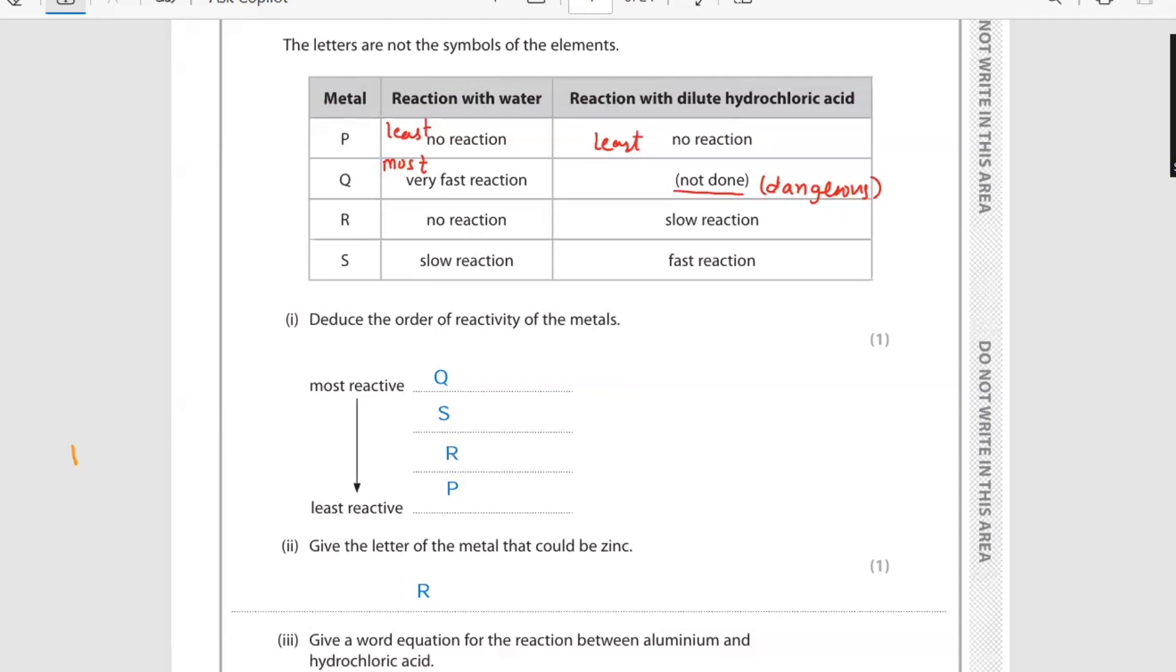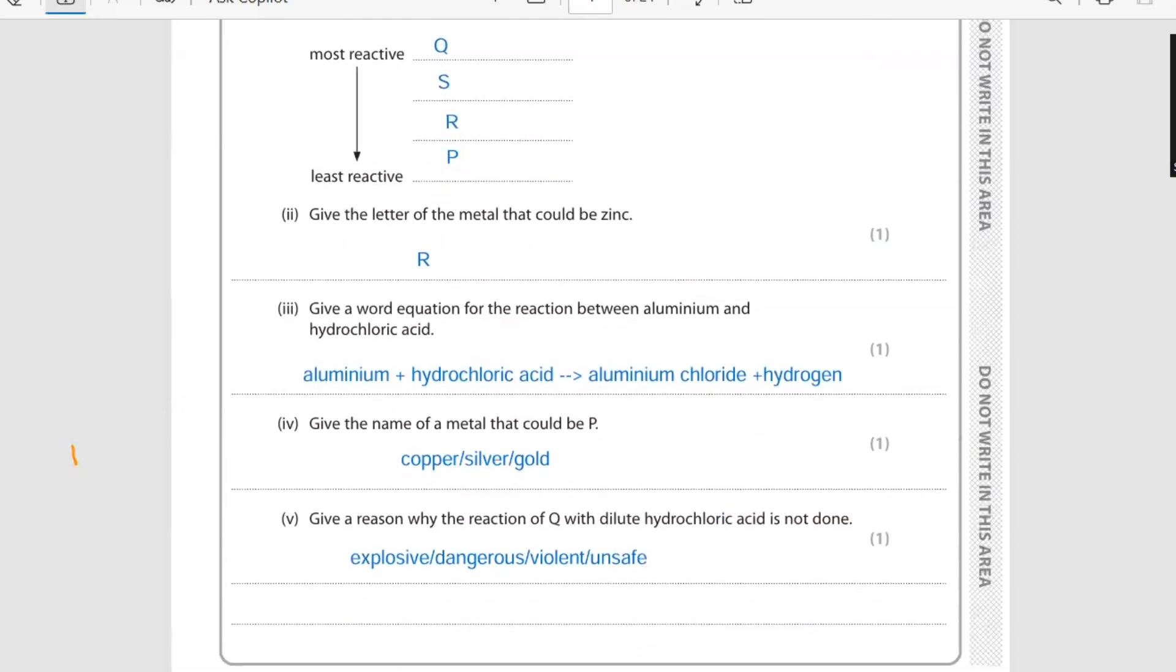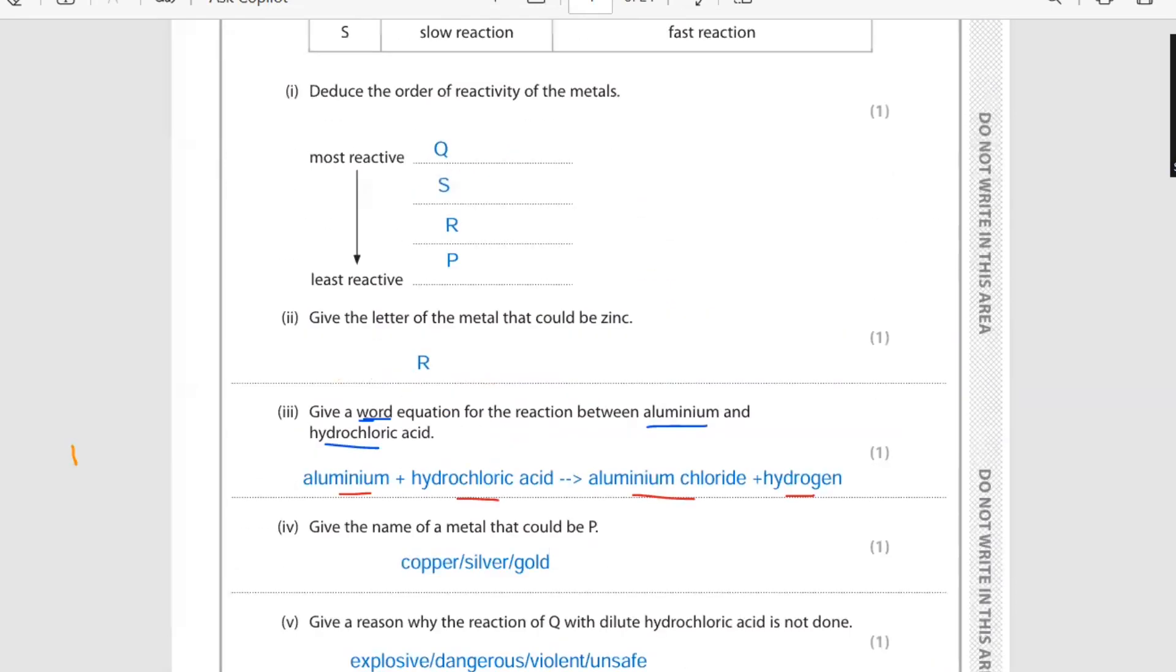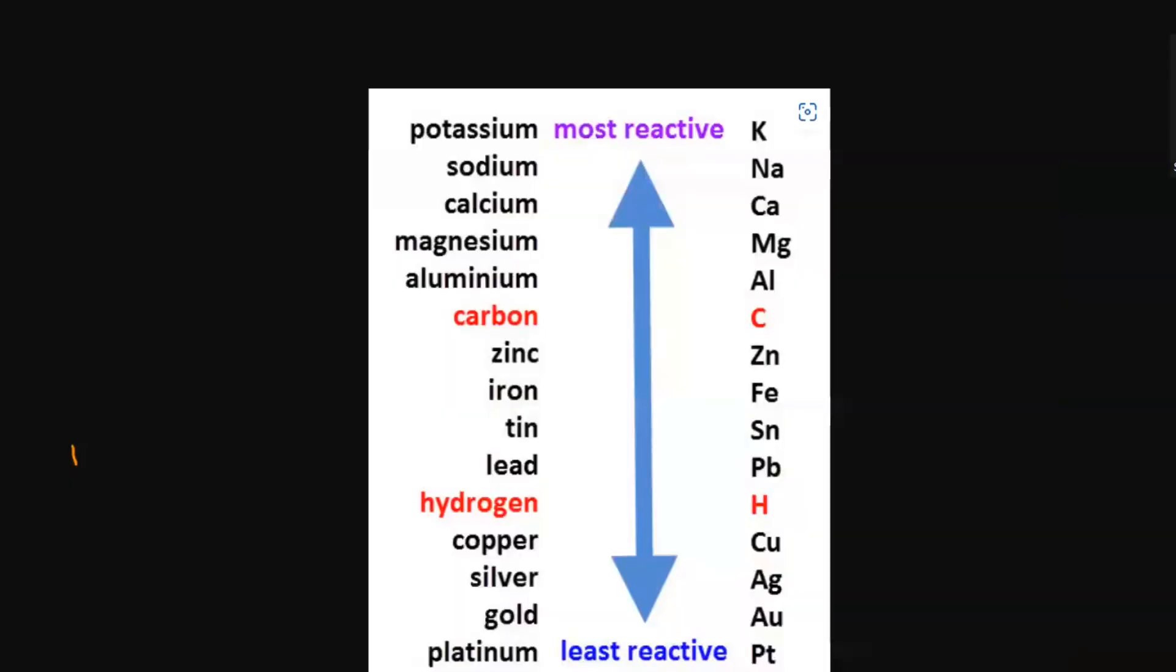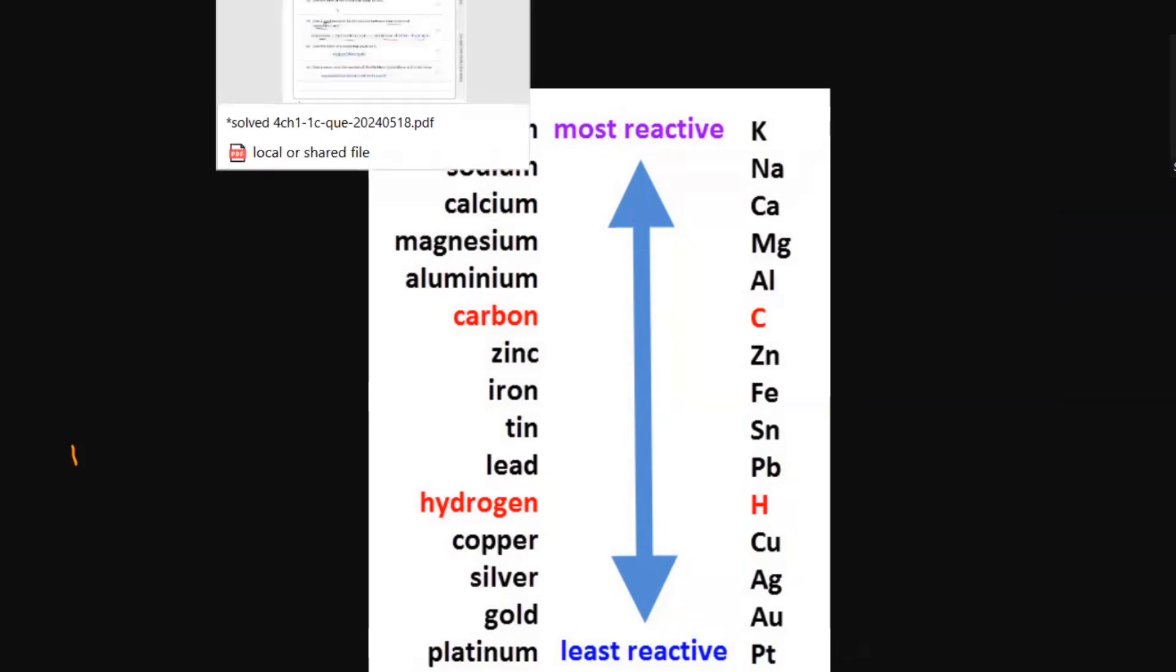Give a word equation - if the question says word equation, it means you have to give the word equation, don't write the chemical equation. Between aluminium and hydrochloric acid: whenever metal reacts with any acid it gives you salt and hydrogen gas. So aluminium plus hydrochloric acid gives you aluminium chloride salt and hydrogen gas. Give the name of metal that could be P - P is least reactive metal and in the reactivity series the least reactive metals which are below hydrogen could be copper, silver, gold, platinum. You can give the name of any of these metals.